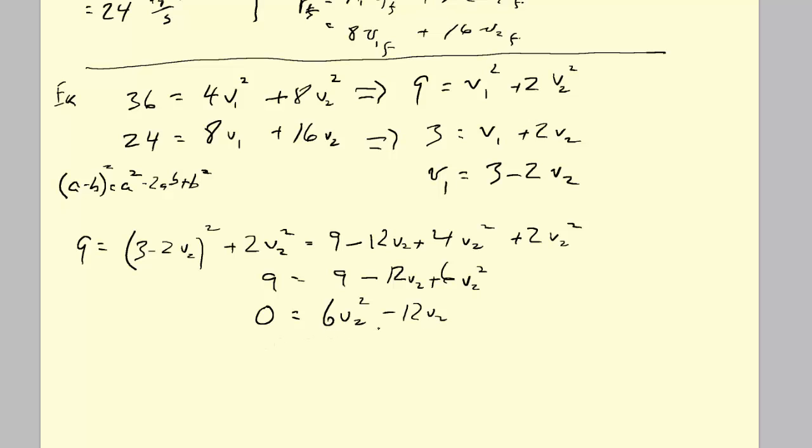Now we get our first break. We've got constant of 9 on both sides which we subtract. Everything can be divided by 6, so this is V2 squared minus 2 V2. This is easily factored. So we get V2 and then V2 minus 2.